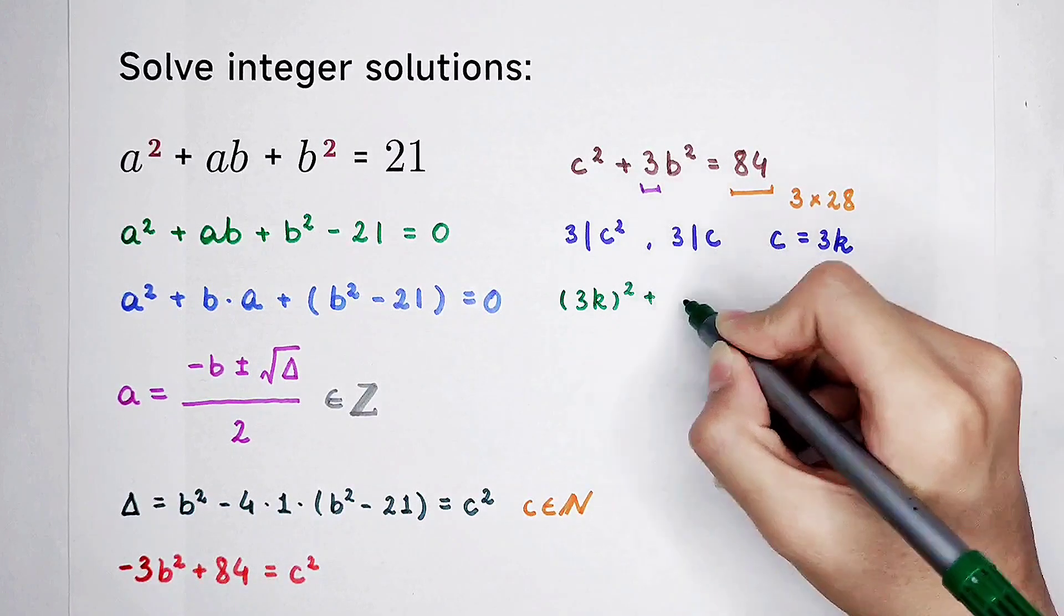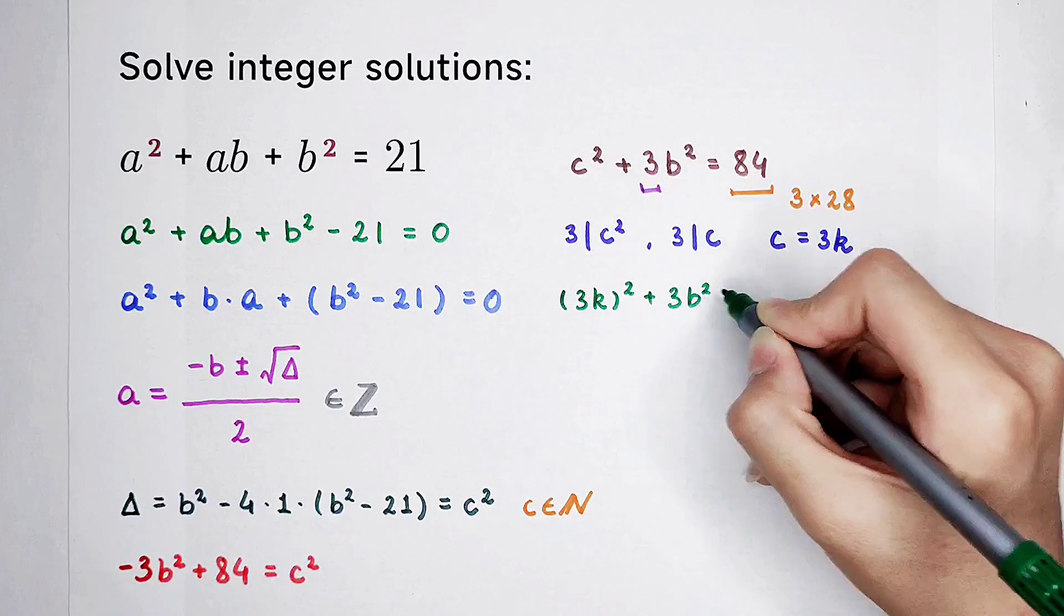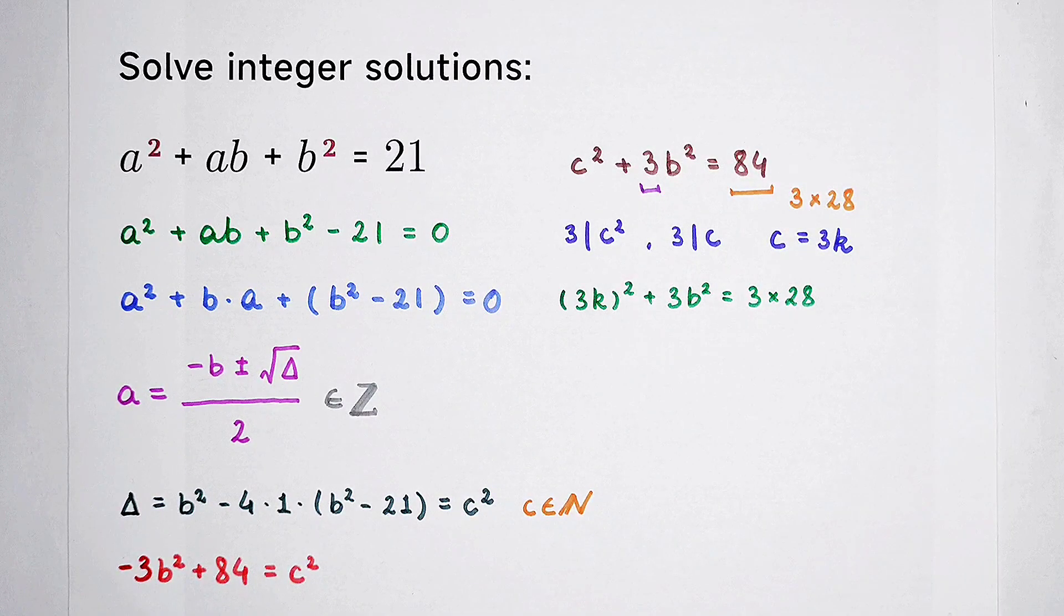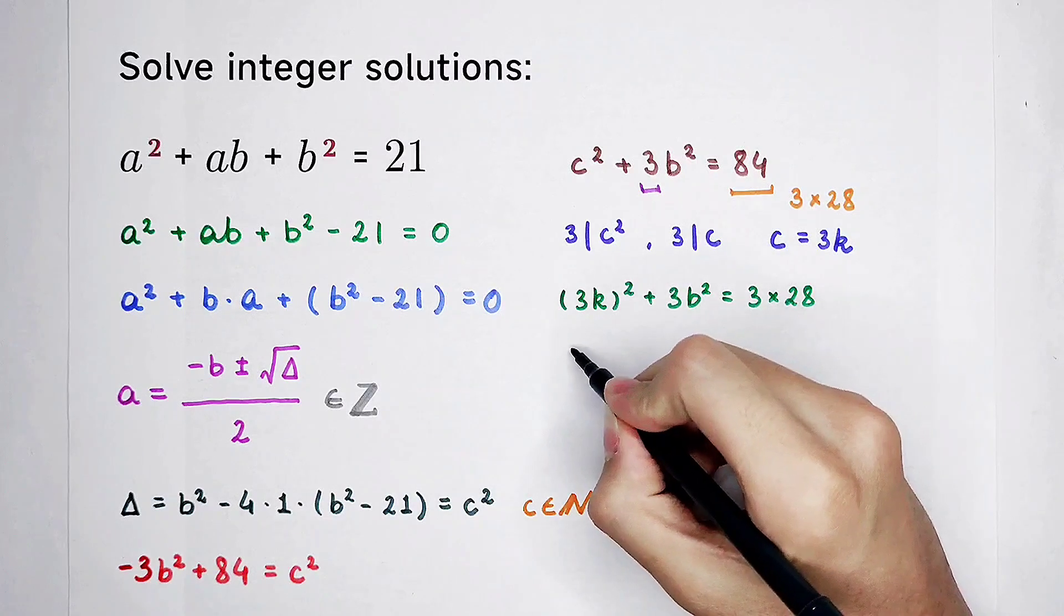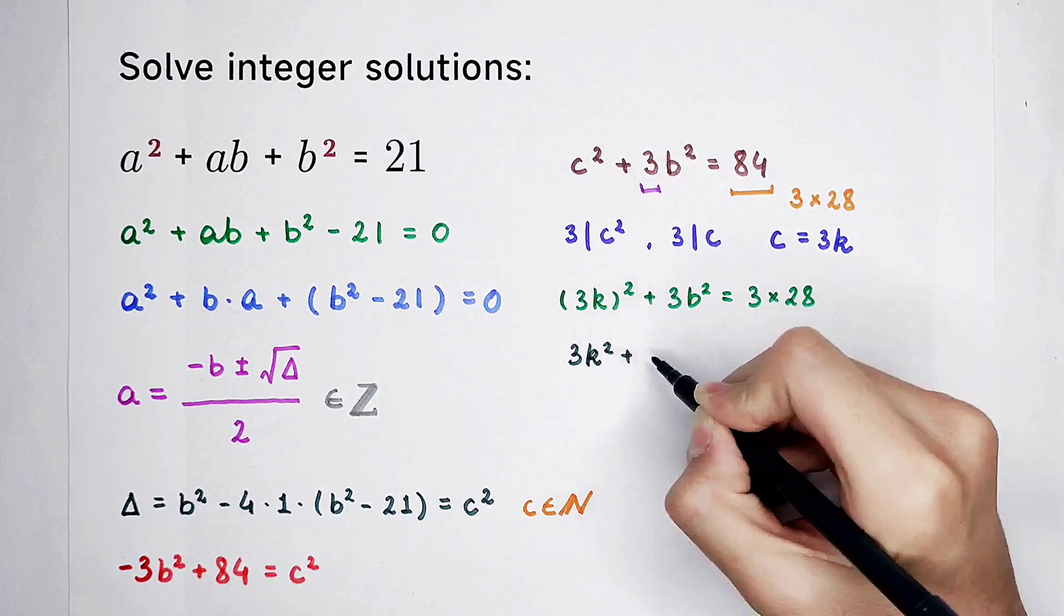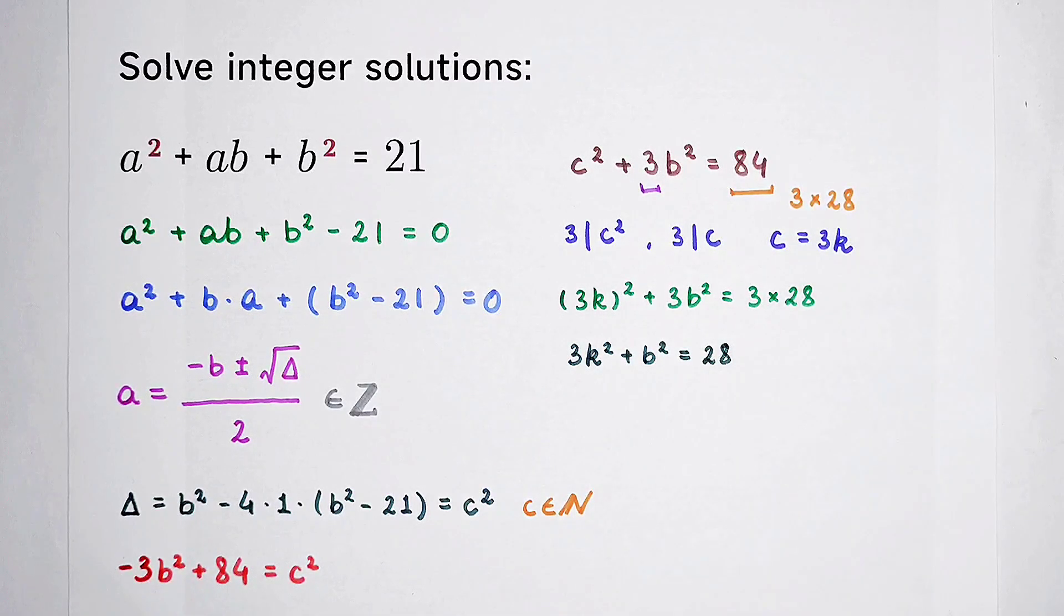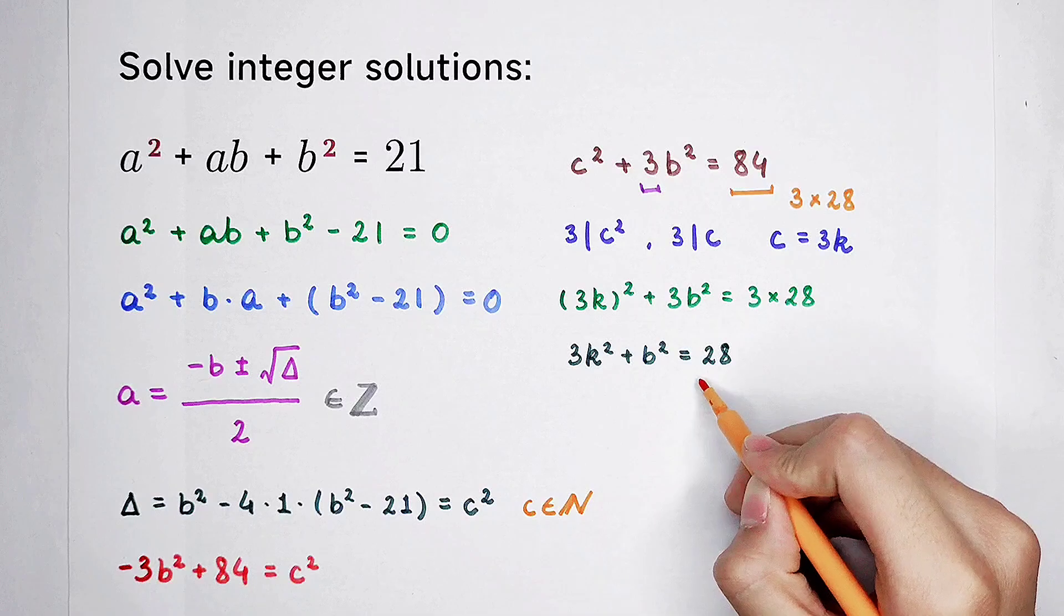And then we can simplify this equation further. 3k squared plus 3b squared is equal to 3 times 28. Divide the both-hand sides by 3. We can get 3 times k squared, and then plus b squared is equal to 28. So, now we can get that 28 is not so large.